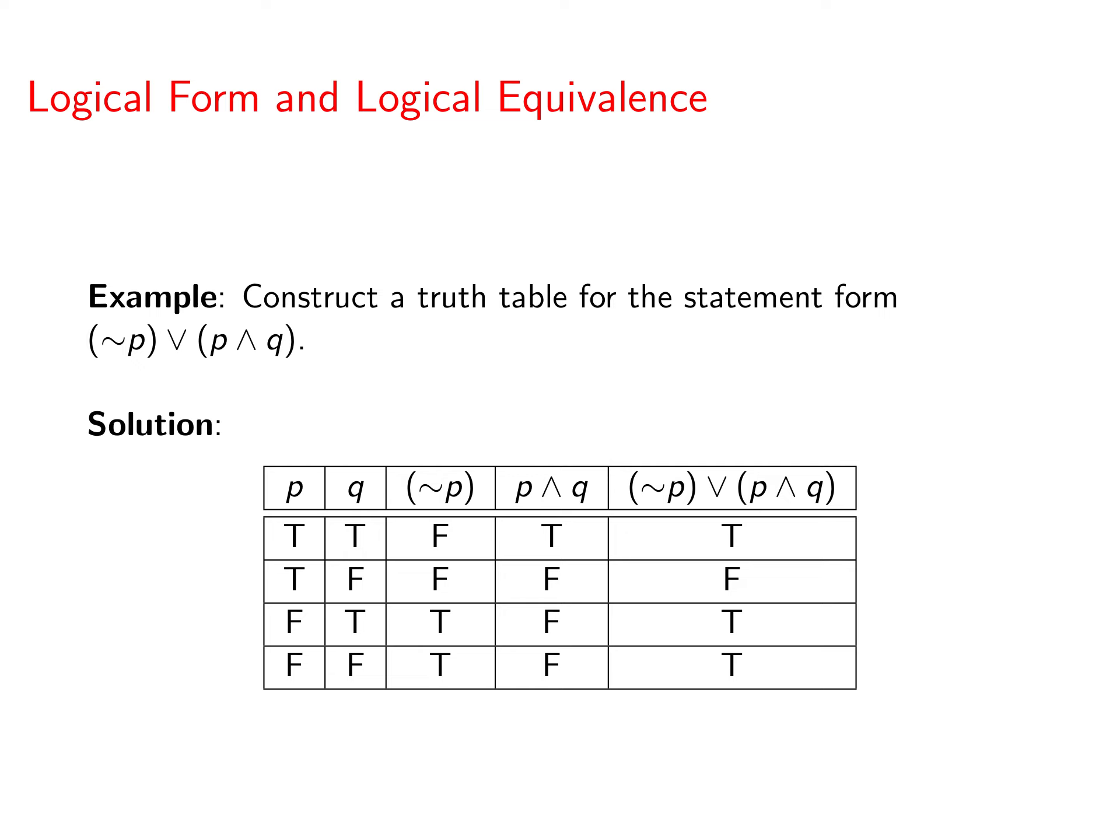Since there are two input variables, that means there's four combinations of truth values for p and q. Then we have our constituent pieces that are in the statement form. We have not p. We also have p and q.